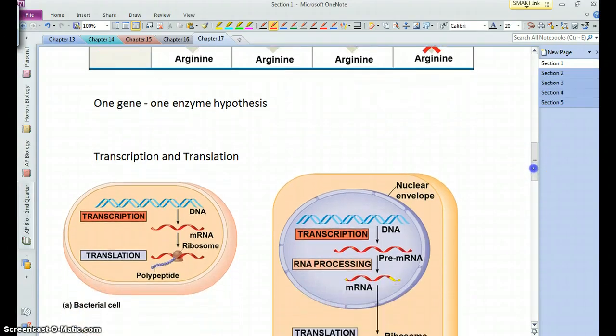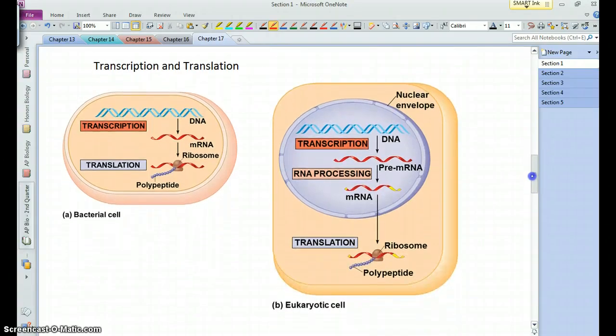And we'll see some of them can code for RNAs that are never converted or used to make proteins, at least not directly. What they're demonstrating is that you have particular mitochondrial RNAs that are made that then are used to make proteins, but not all genes are used to make mRNAs.